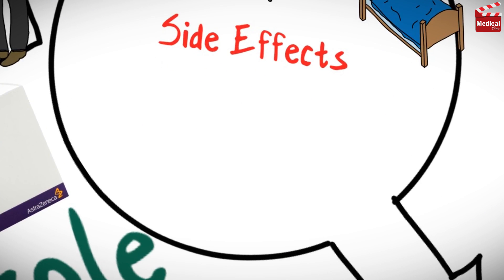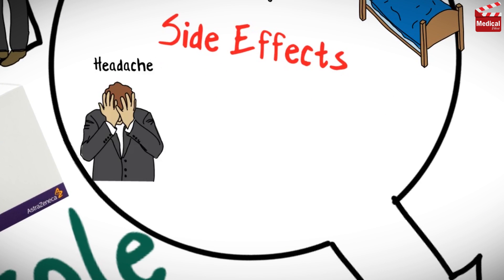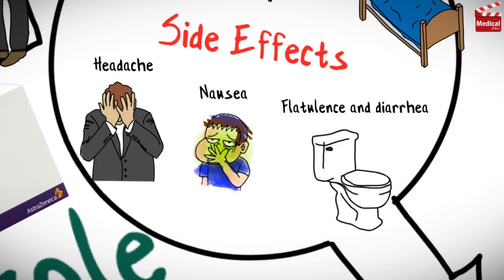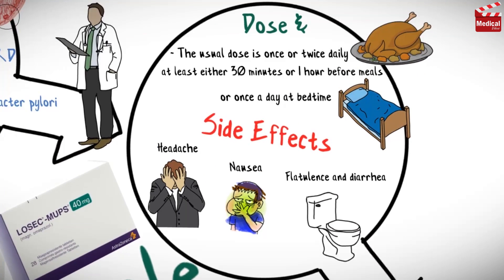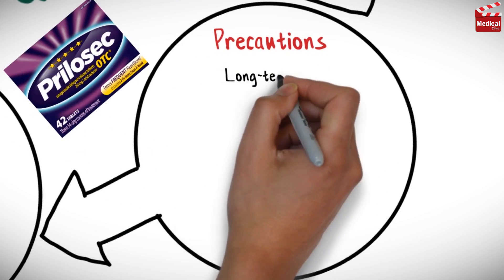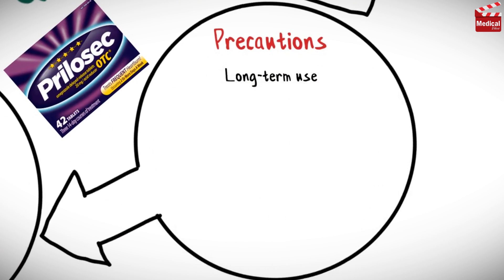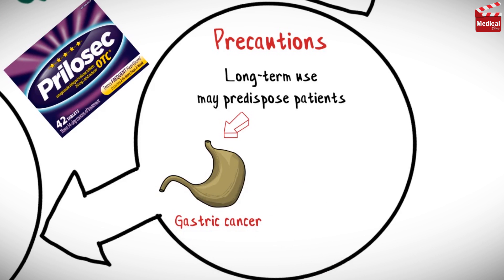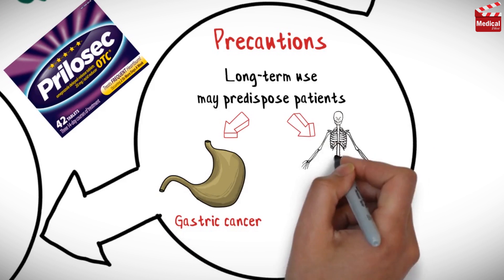Adverse effects are usually few but may include headache, nausea, flatulence, and diarrhea. Long-term use of omeprazole, as well as other proton pump inhibitors, may predispose patients to develop gastric cancer and also increase the risk of osteoporosis.